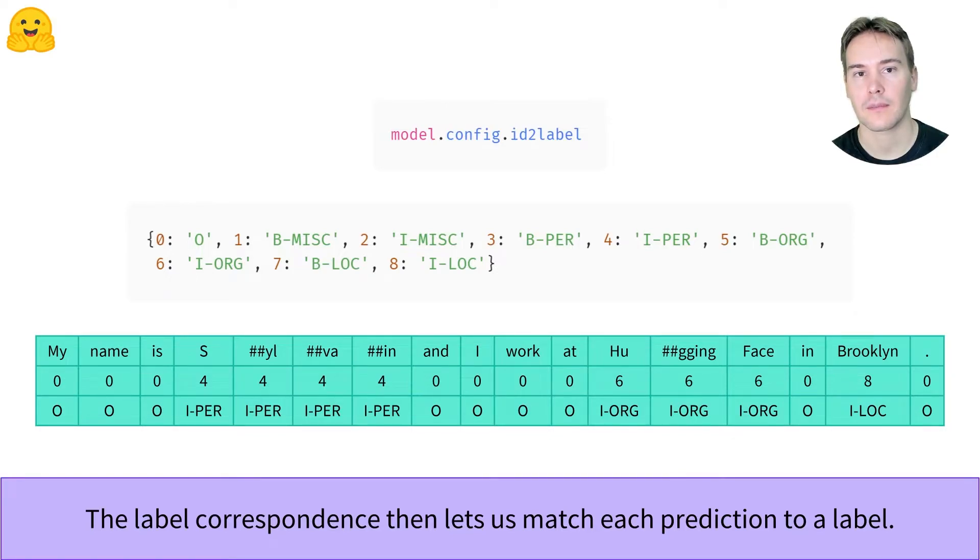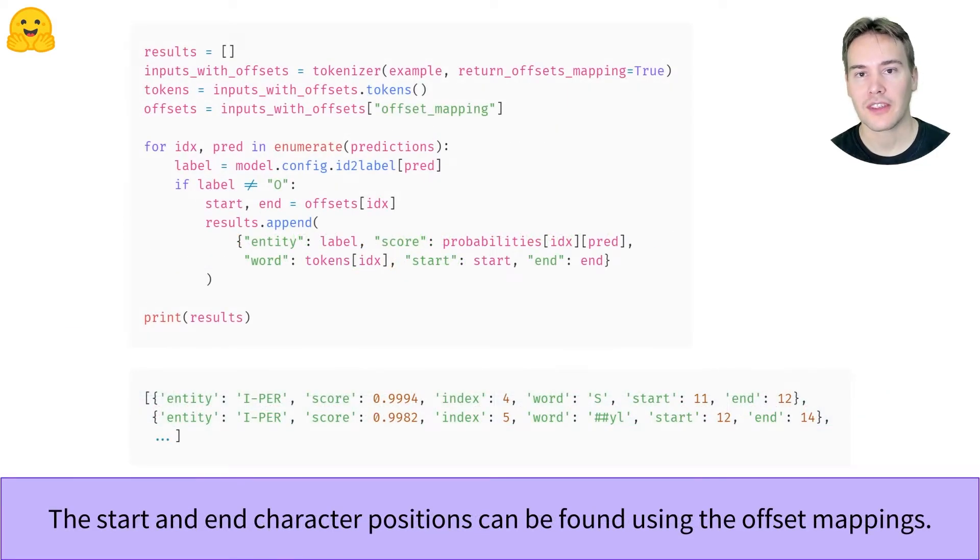We'll need to use the offset mapping of the tokenizer to get those. Look at the video linked below if you don't know about them already. Then looping through each token that has a label distinct from O, we can build the list of results we got with our first pipeline.